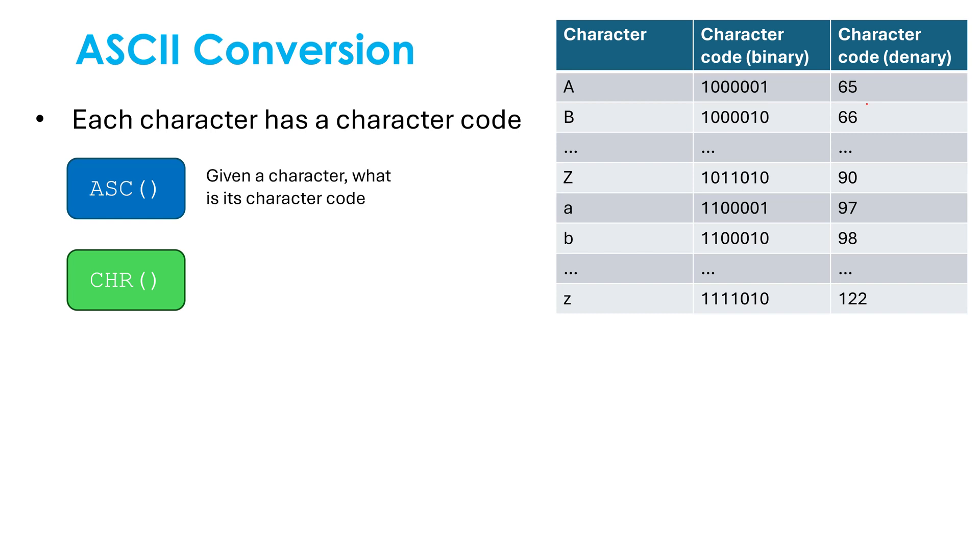So ASCII in capitals with brackets, when it is given a character in the bracket, it finds out what is its character code. So if I wrote ASCII with a capital A, this would give us 65. CHR, short for character, when it's given a character code, it tells you what character this is. So if I had CHR with 98 in the brackets, this would give me lowercase B.